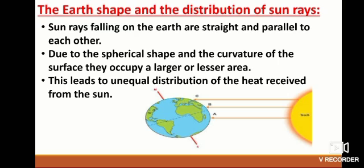Due to the spherical shape and the curvature of the surface, they occupy a larger or lesser area. This leads to unequal distribution of the heat received from the sun.